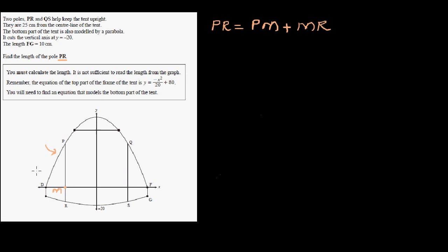Let's start with the top parabola. The top part of this tent can be modeled by the equation Y = −X²/20 + 80. By looking at this parabola, the vertex is at (0, 80). So this basic parabola has been flipped upside down, moved 80 units up, and there is a stretch factor of 20.